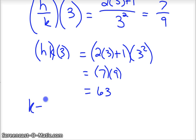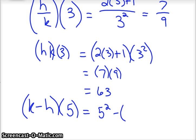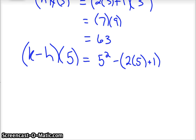And if you wanted k minus h at 5, well, we know k is x squared. So we'd have 5 squared minus, and again in parentheses because we've got to plug in, we've got to subtract it out, it would be 2 times 5 plus 1. And again, do your order of operations. So that'd be 25 minus 10 plus 1 is 11. 25 minus 11 is 14.